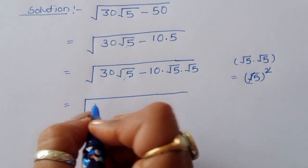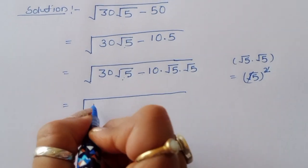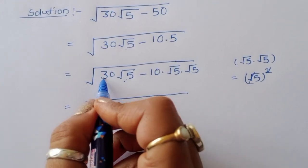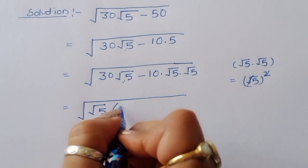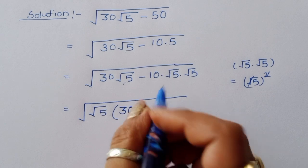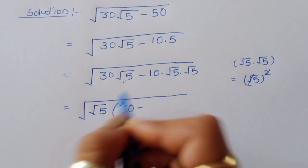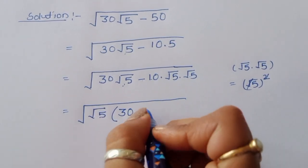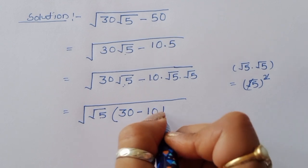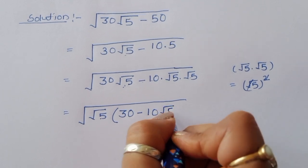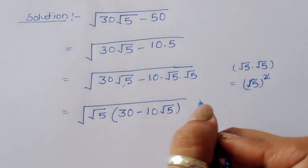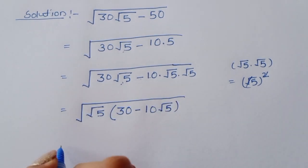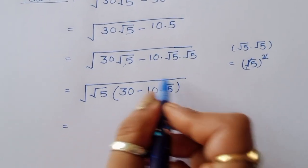Now we can take √5 as a common factor. Taking √5 common, the left term inside becomes 30 minus 10 times √5, so we have √5 times (30 minus 10√5).